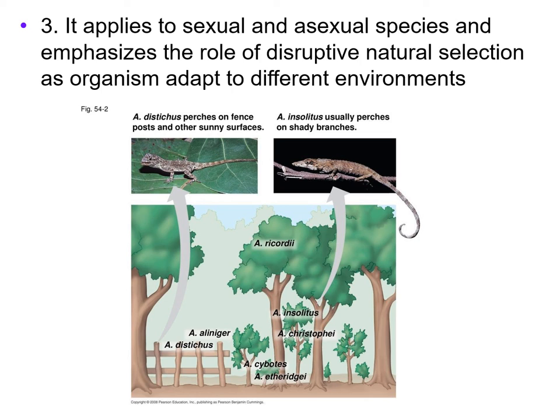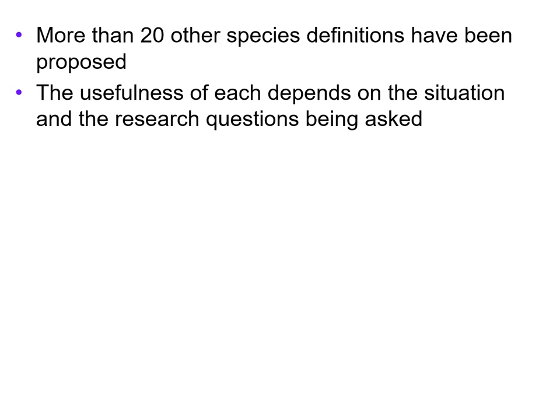So we've talked about three types of species concepts: the biological species concept, the morphological species concept, and the ecological species concept. But there are more — over 20 other species definitions have been proposed. The usefulness of each depends on the situation and the research question being asked.